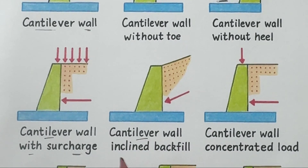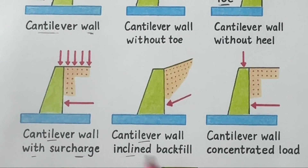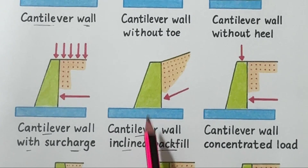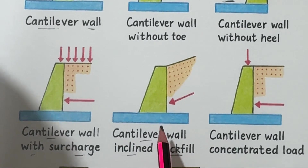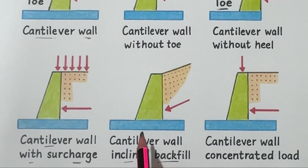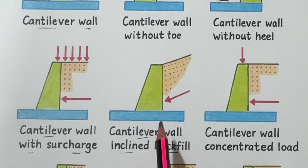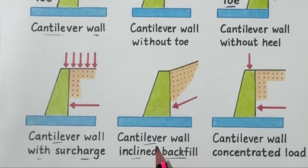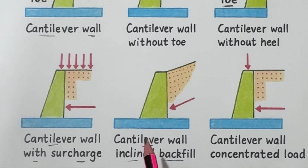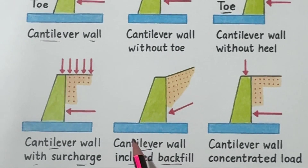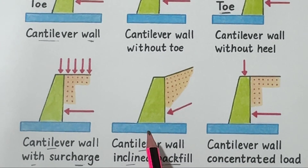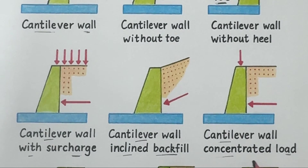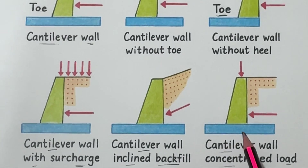Number five: cantilever wall with inclined backfill. In this case the soil surface behind the wall is not level but sloped upward. That slope adds extra pressure on the wall, so engineers design the wall accordingly — sometimes with more thickness or a deeper foundation to handle the added lateral load.